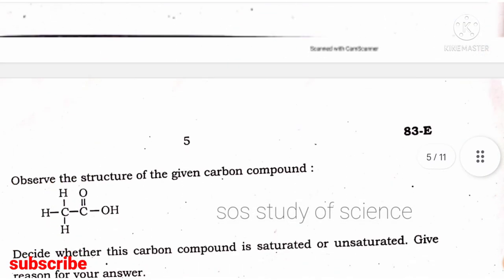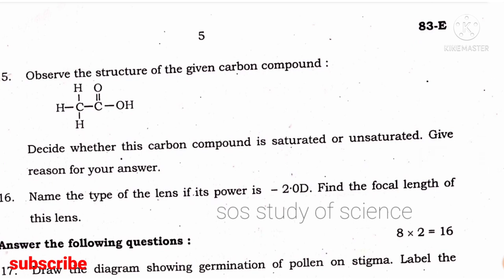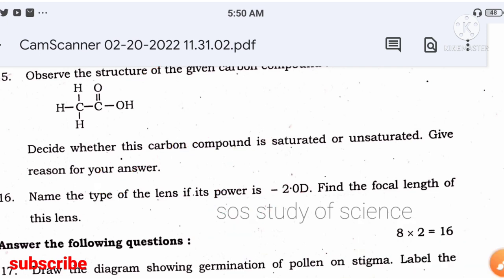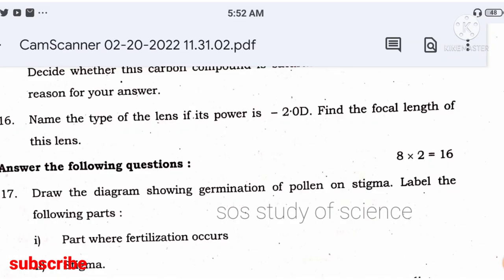Observe the structure of the given carbon compound — decide whether it is saturated or unsaturated. Most students write unsaturated by seeing a double bond, but check: if the double bond is between carbon and oxygen, not carbon and carbon. Between carbon and carbon there is only a single bond, so this is an example of a saturated compound, not unsaturated.